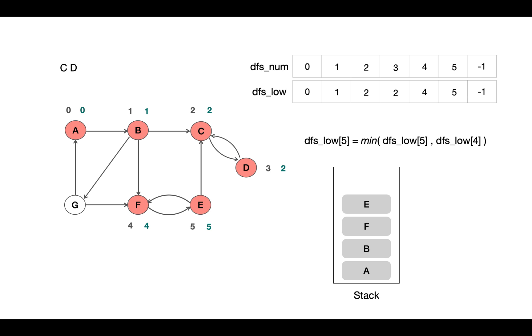Now getting back to F, we do the same and eventually realize that it is the first explored vertex in this SCC, as it has the same value 4 for DFS_num and low. So E, F is another SCC in the given graph.